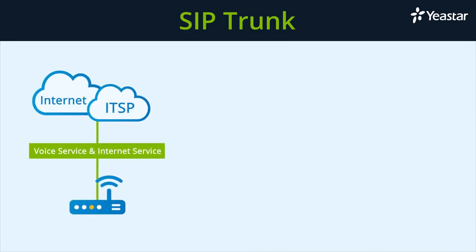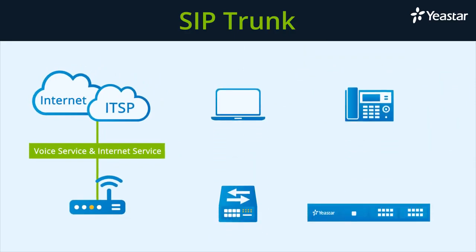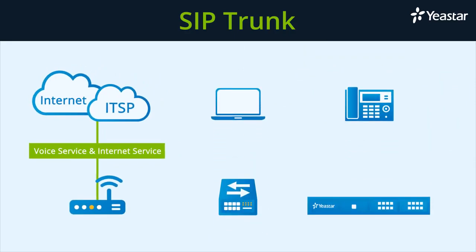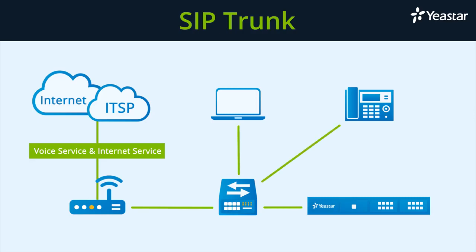If the internet service also goes through the same Ethernet cable, connect the cable to the router directly. Since we have connected the PBX to the switch, the PBX will obtain both the voice service and the internet service through that cable. At the same time, other devices connected to the router will be able to access the internet through that cable.